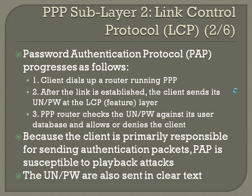Password Authentication Protocol, or PAP, progresses as follows. A client dials up a router running PPP — this terminology is thought of from the perspective of dialing into a router, rather than two routers just connecting to each other. After the link is established, the client sends its username and password at the LCP feature layer. The PPP router checks the username and password against its user database and allows or denies the client. Because the client is primarily responsible for sending authentication packets, PAP is susceptible to playback attacks, and the username and password are sent in clear text.